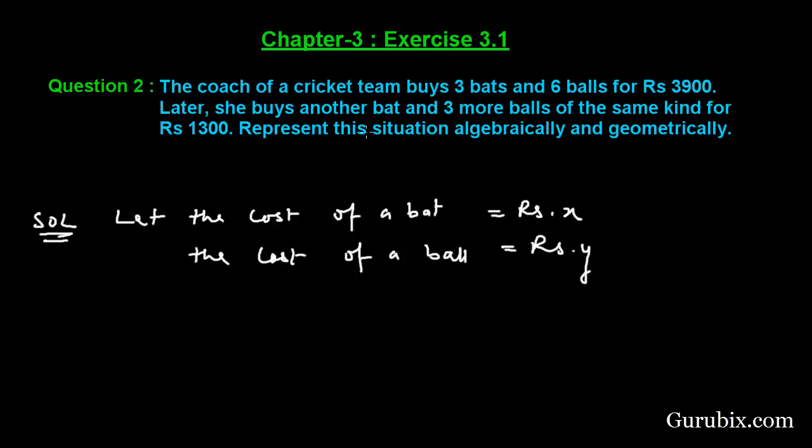In condition 1, we are given that she buys 3 bats and 6 balls. This means 3X plus 6Y, and the total amount is Rs 3900.